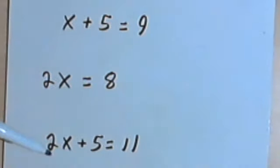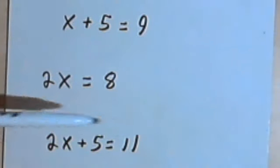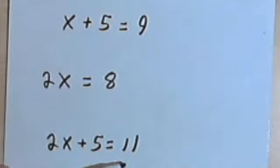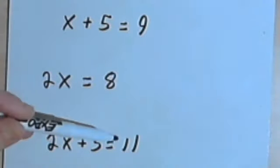Well, you might have to do a combination of things. You might have something like 2x plus 5 equals 11, in which case we'll subtract the 5 first from both sides, and then we're going to divide both sides by 2.